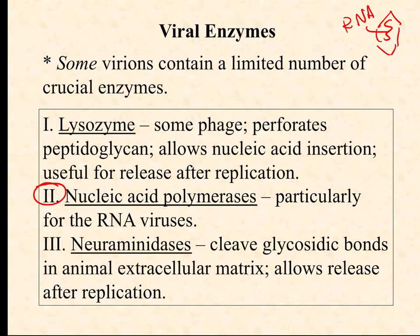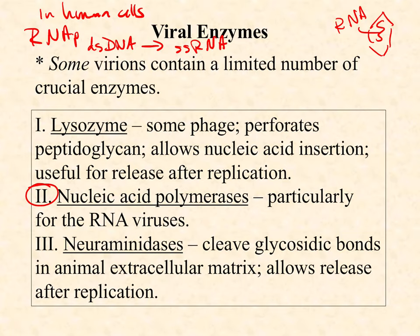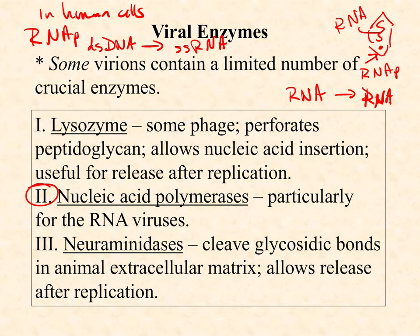The answer is no. In human cells, RNA polymerase takes a double-stranded DNA molecule and makes a single-stranded RNA copy — in other words, human RNA polymerase is DNA-dependent. There's no DNA in an RNA-based virus, so your RNA polymerase cannot read RNA and make more RNA from it. Therefore, RNA viruses are going to package with them an RNA-dependent RNA polymerase that can take a single- or double-stranded RNA and make RNA copies.